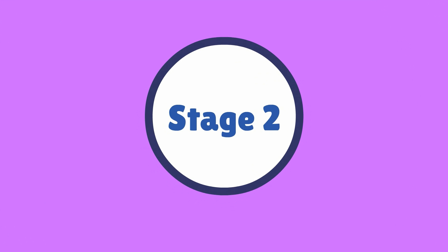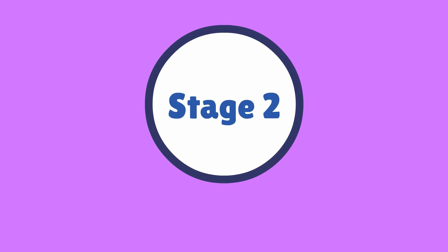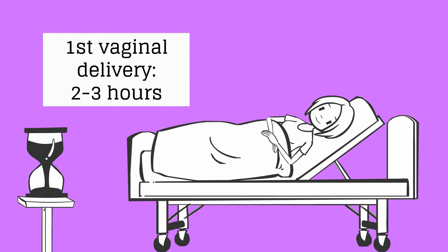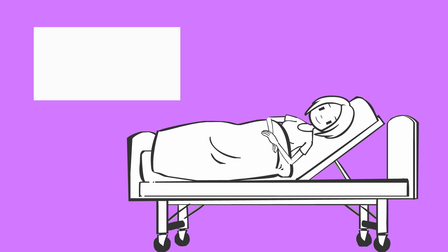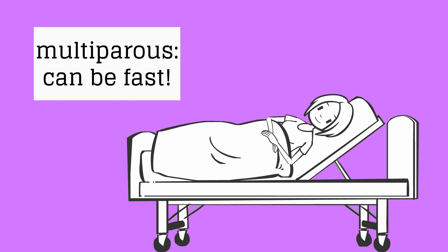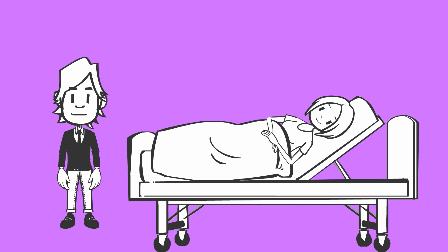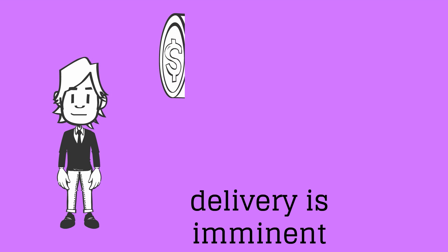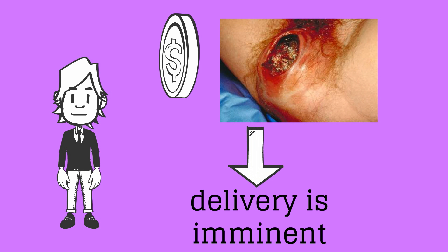Lavora is now completely dilated at 10 centimeters and is in stage 2 of labor. For women who have not had a vaginal delivery, pushing usually takes about 2 to 3 hours, and the length is shorter if no epidural was received. If a woman has already had one vaginal delivery, the second stage may be very short. Since this is Lavora's first delivery, she will likely need to push for 2 to 3 hours. Delivery is imminent when a half-dollar size of the fetal vertex is visible between pushes.